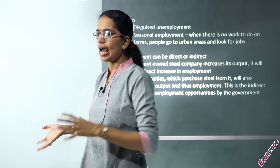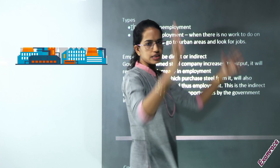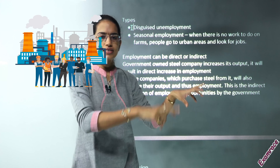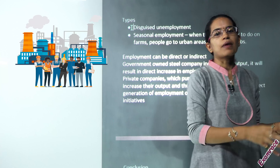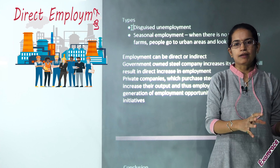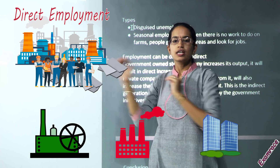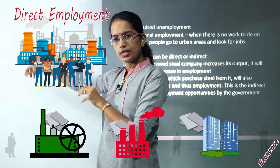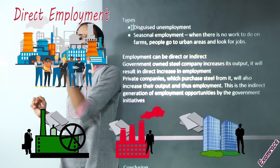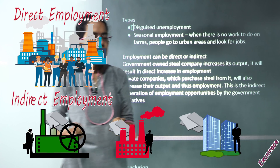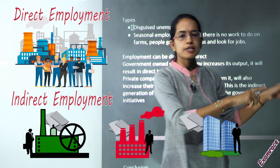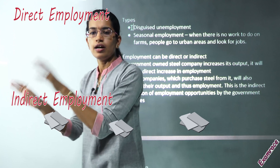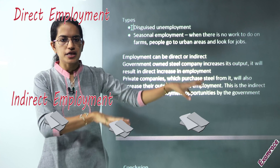Now let's talk about direct and indirect employment opportunities. Let's say you have a steel plant run by the government. This steel plant is directly hiring people, so all people working with that government steel unit are part of direct employment. However, this steel company is supplying its output to various private units. Whatever private units are being served by this larger government unit will further employ some people. The employment of people in those private sector units would be part of indirect employment, because the direct employment was provided by the government unit.